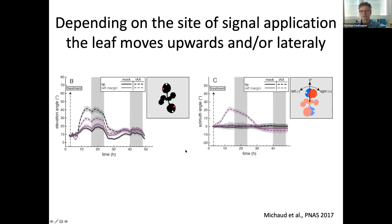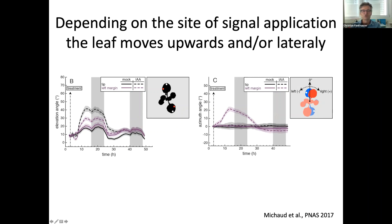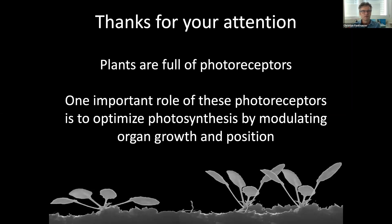These leaves are actually even smarter than that — you can twist them into changing position not only going up but also moving sideways depending on where you provide the signal. If you provide the signal at the tip of the leaf, this leaf specifically moves up. But if you change this cue selectively on the side, the leaf still moves up — a good strategy for over-topping neighbors — but it now also moves laterally. It's almost like a radar all around the ring of this leaf: depending on where it gets the cues, it totally reorients its organ. My summary is that plants are full of photoreceptors, and one important role of these photoreceptors is to optimize photosynthesis by modulating organ growth and the position of these organs.